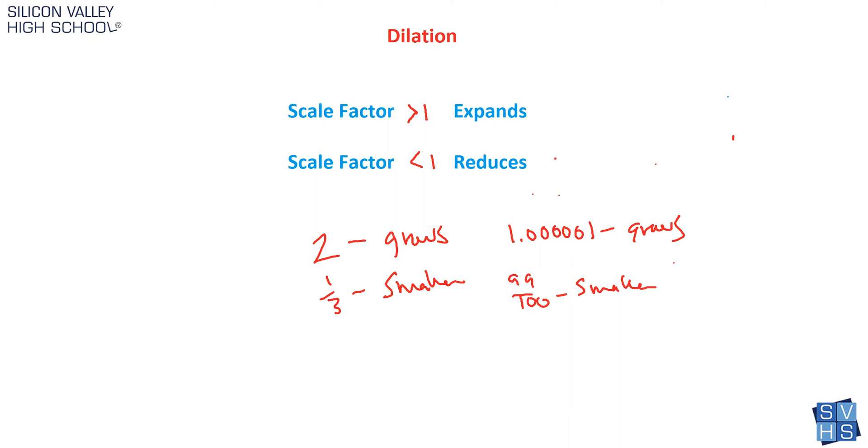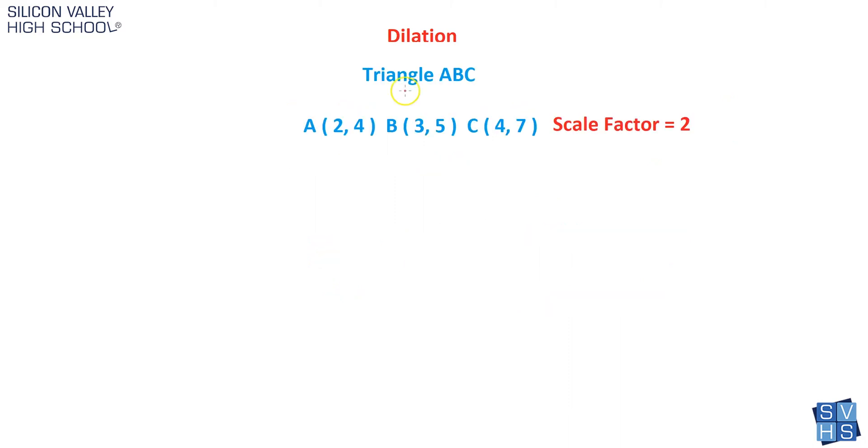Like let's say we had a triangle. Here's a good example. Let's say we had a triangle ABC with the points A, B, and C. And they gave us the points 2, 4, 3, 5, 4, 7. And they say, find the new points of the new triangle formed when you have a dilation with a scale factor of 2.